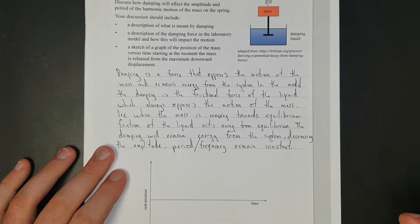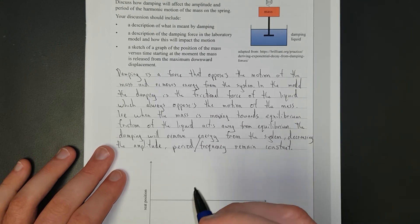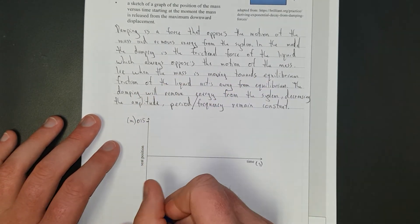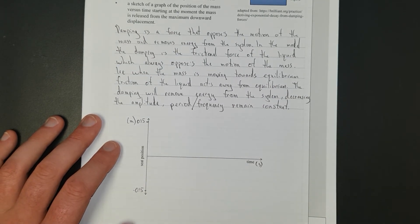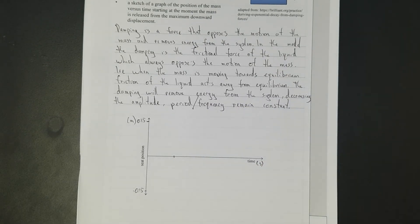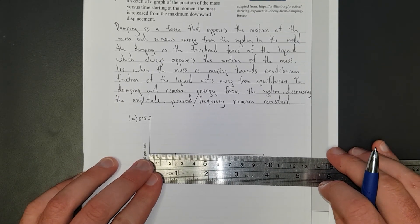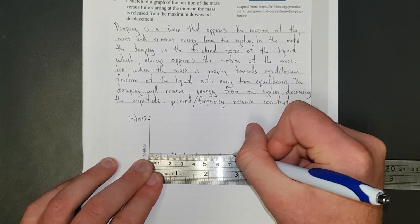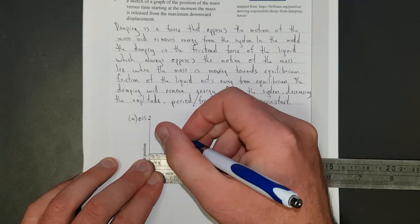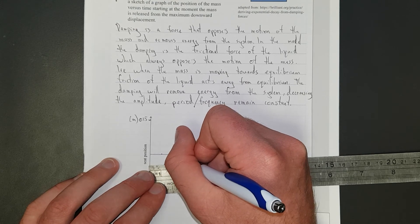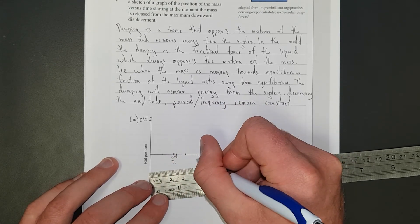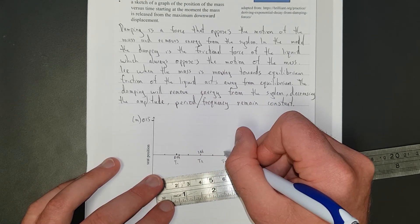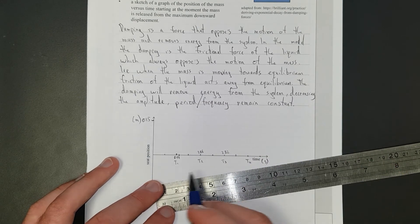The damping will remove energy from the system, decreasing the amplitude. Period and frequency remain constant, which is what they're asking. They always ask for that because it's kind of a neat thing. Let's draw a graph of damping. It starts at 0.15 and negative 0.15. We'll have one period every centimeter. This is 0.94, this is T1, T2 at 1.88, T3 at 2.82, T4. You really need three.